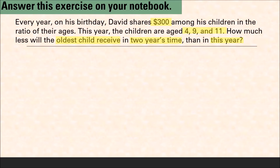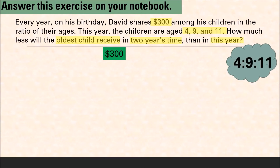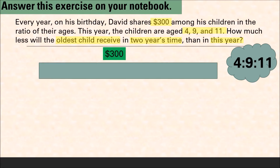We are given the amount of three hundred dollars and the ages of the children — four, nine, and eleven — which we are going to use as the ratio. We have to find how much the oldest child receives this year and in two years' time, then subtract them to answer the question. So let's start with the three hundred dollars to be shared in the ratio 4 is to 9 is to 11.